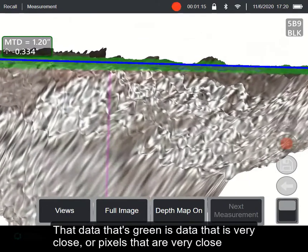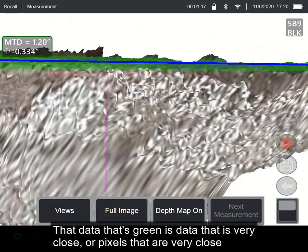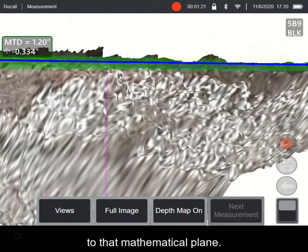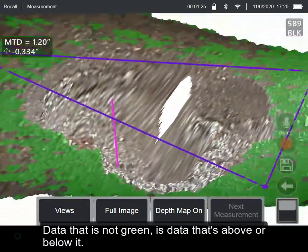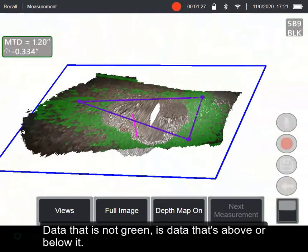That data that's green is data that is very close, or pixels that are very close to that mathematical plane. Data that is not green is data that's above or below it.